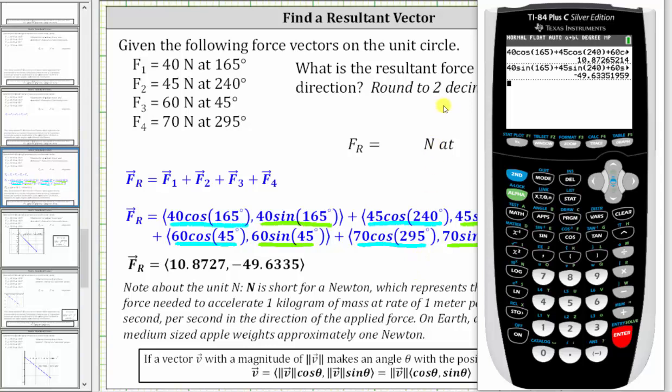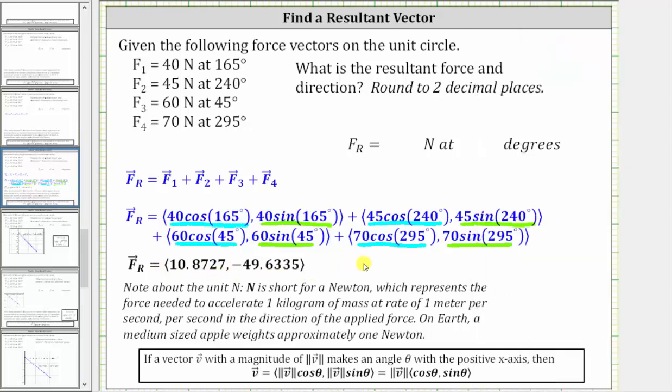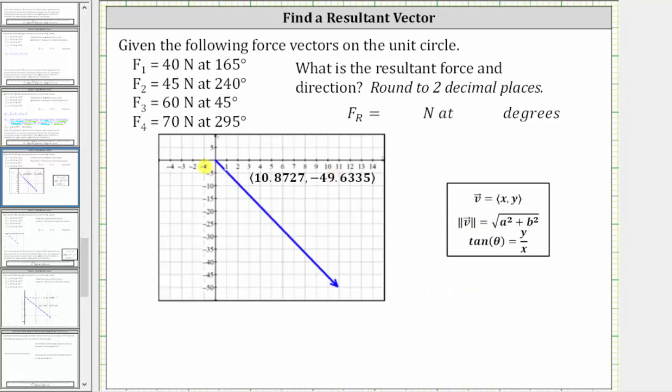And notice how we do get approximately negative 49.6335. We're told to round the answer to two decimal places, but I'm using four decimal places here because now we have to find the magnitude and direction of this resultant force. Also notice the vector's in the fourth quadrant because the x component is positive and the y component is negative.